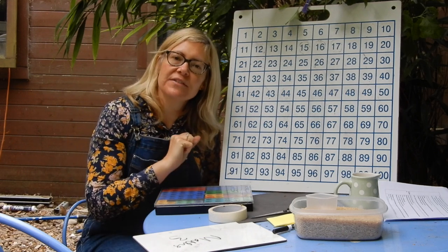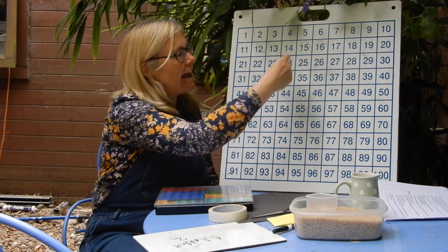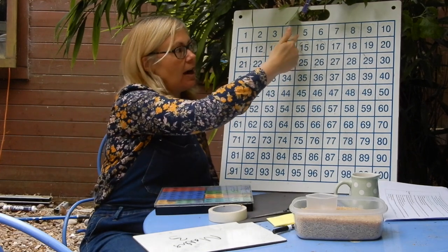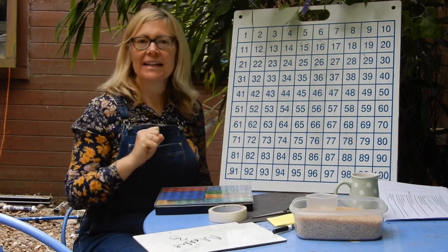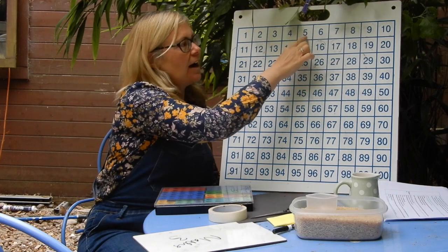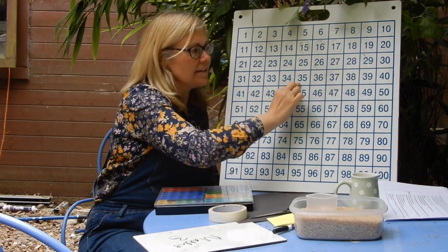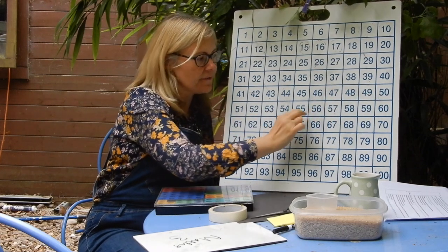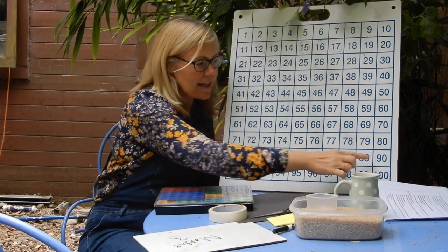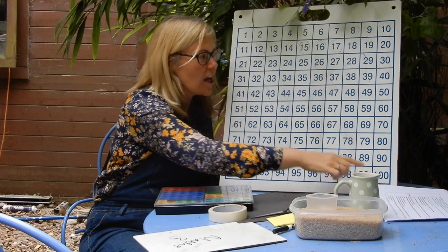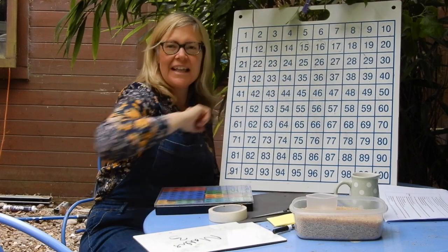We're going to count in fives first of all today to a hundred and fifteen. So we're going to use the whole of the hundred square and then just come back and look at revisiting one hundred and five and one hundred and ten. Are you ready? Let's do it to our core tune. Five, ten, fifteen, twenty, twenty-five, thirty, thirty-five, forty, forty-five, fifty, fifty-five, sixty, sixty-five, seventy, seventy-five, eighty, eighty-five, ninety, ninety-five, one hundred, one hundred and five, one hundred and ten, one hundred and fifteen. Excellent counting in fives.